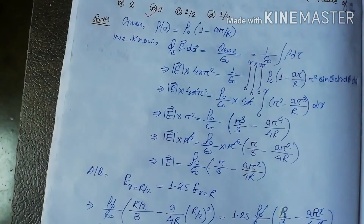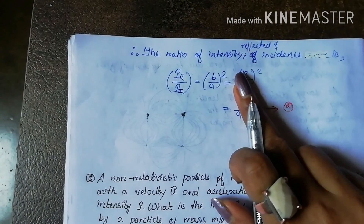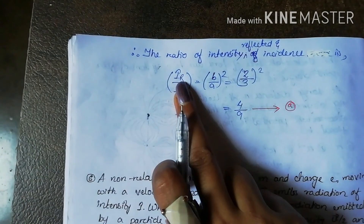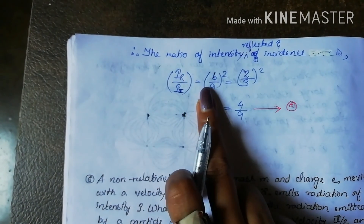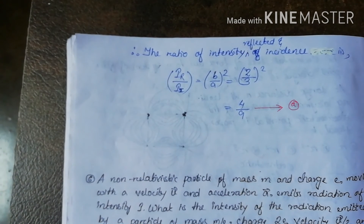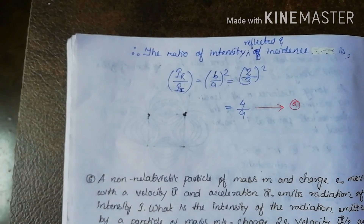With A/B = 3/2, the ratio of reflected intensity to incident intensity is (B/A)² = (2/3)² = 4/9. The correct option is option A.